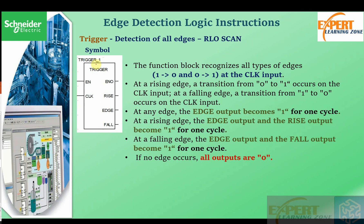Next we look at the trigger function, which is detection of all edges. The trigger function detects all edges — it is a combination of both the falling edge trigger and rising edge trigger. The function block recognizes all types of edges from one to zero and zero to one at the clock input. At the rising edge, the edge output and the rise output become one for one clock cycle. At the falling edge, the edge output and the fall output become one for one clock cycle.